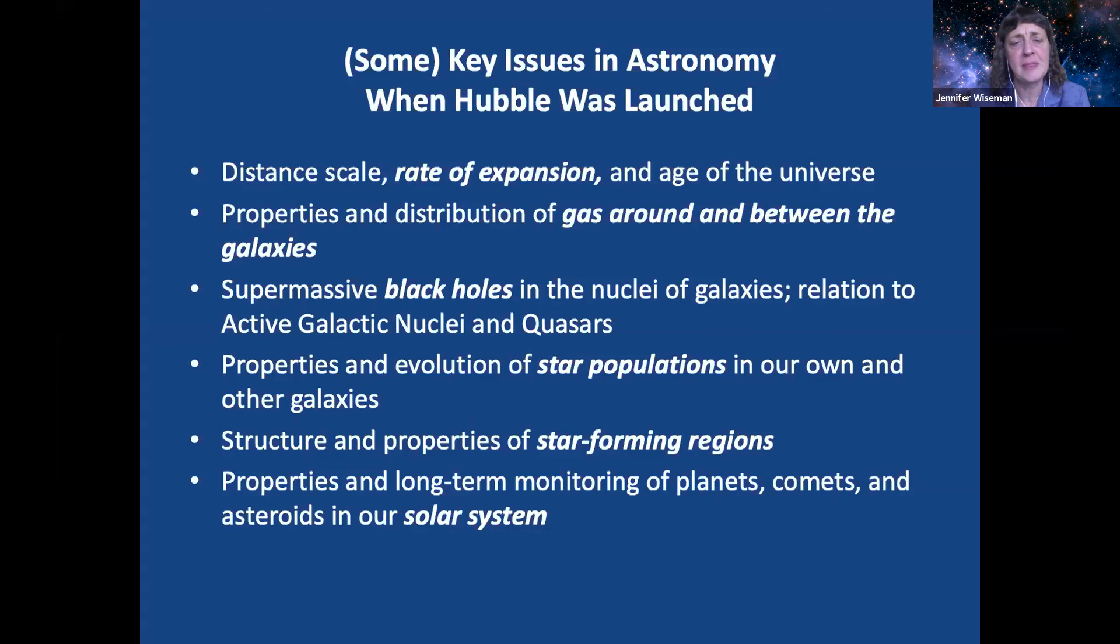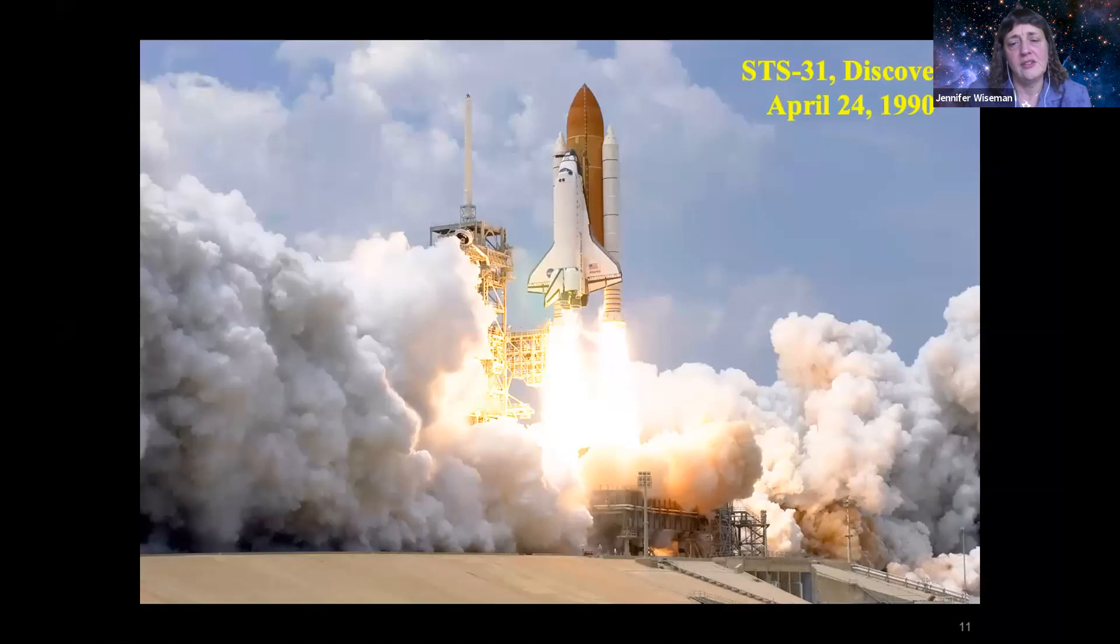Also the properties and distribution of gas around and between galaxies, so-called intergalactic medium. The question of whether there are in fact supermassive black holes lurking in the nuclei of galaxies, and if so, what would be the relationship of these to active galactic nuclei and these quasars, these distant, very bright objects in the universe? What about the properties and evolution of star populations in our own and other galaxies? And what are the structure and properties of these regions where stars perhaps may still be forming? And even in our own solar system there was curiosity about the properties and the long-term, what you would learn from long-term monitoring of planets, comets, and asteroids.